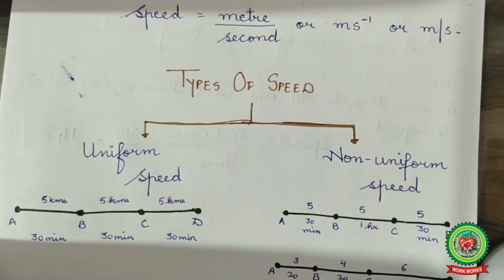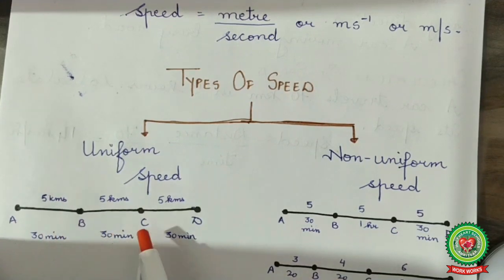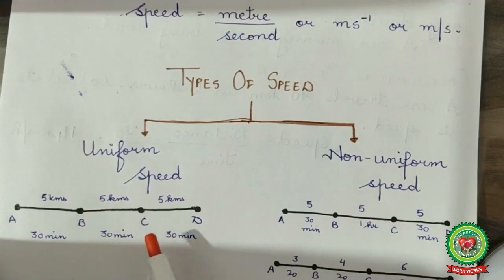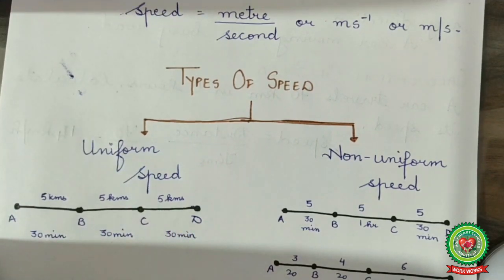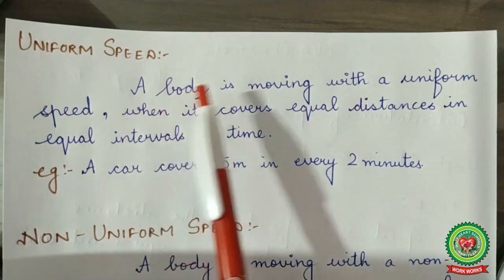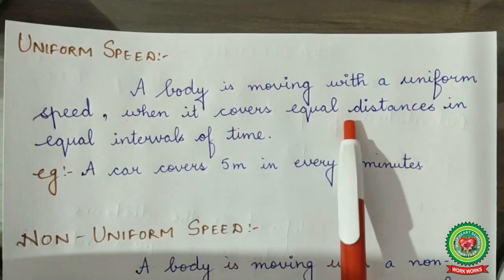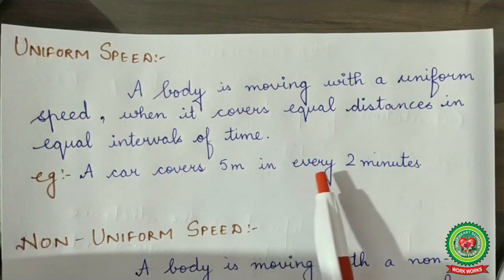Let's discuss uniform speed with an example. A body travels from point A to D, moving through A to B, B to C, and C to D. The distance between each point is 5 km, and it covers each segment in 30 minutes. Since it covers equal distances in equal intervals of time, it is moving with uniform speed. For example, a car covers 5 meters every 2 minutes.